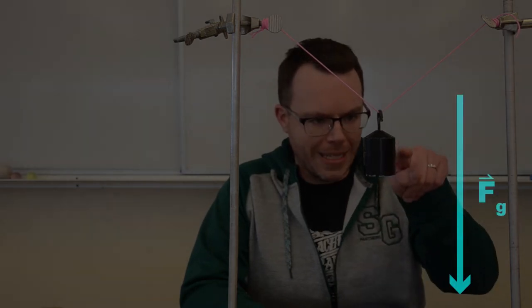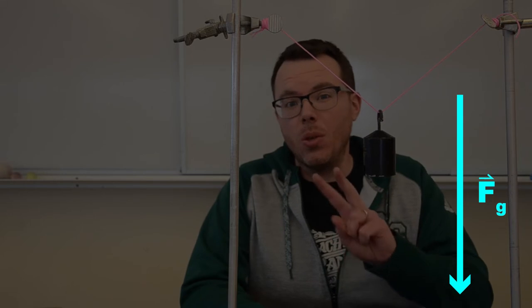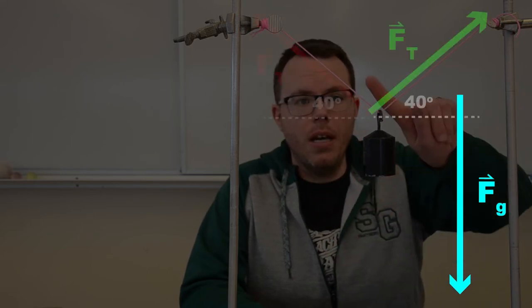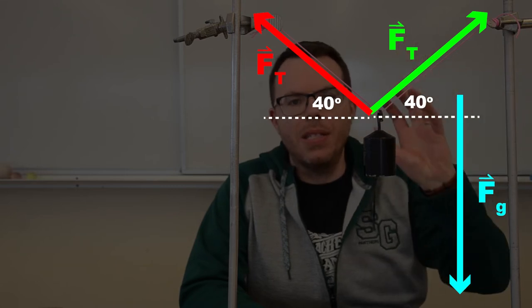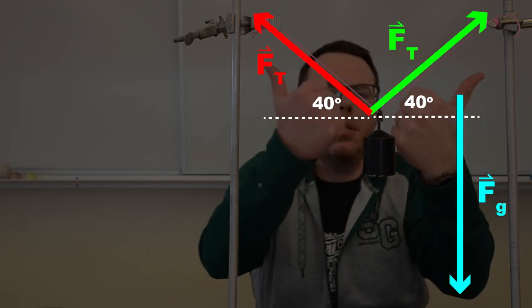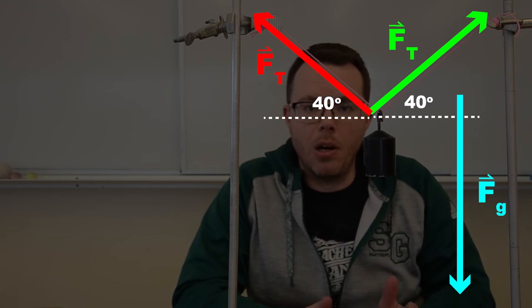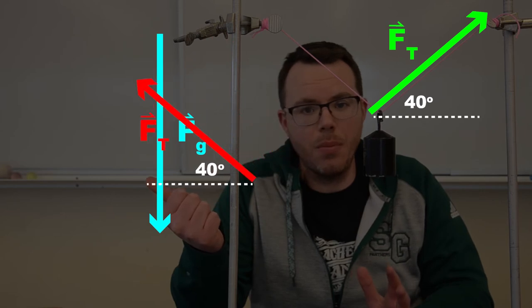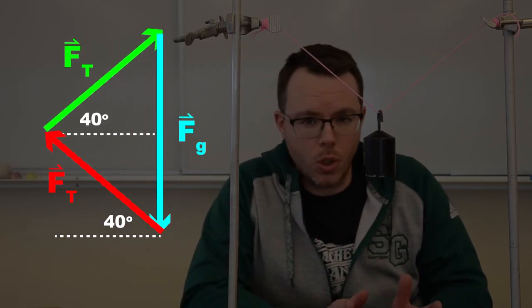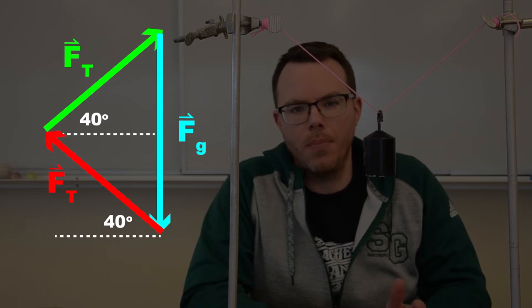There's a force of gravity going downwards, acting on that mass. In this case, there's two forces of tension going in the same direction as each of those ropes. They'll have the same magnitude, but going in opposite directions. Once I've got my free body diagram drawn out, I can make that into a triangle, just like I did before. Now it won't be a right angle triangle, but I can still solve it to find out what each of those forces of tension are.